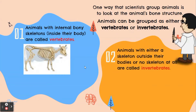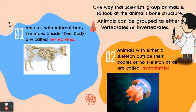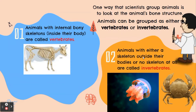Animals with either a skeleton outside their bodies or no skeleton at all are called invertebrates. For example, jellyfish — no skeleton at all — and crab — skeleton outside their bodies.